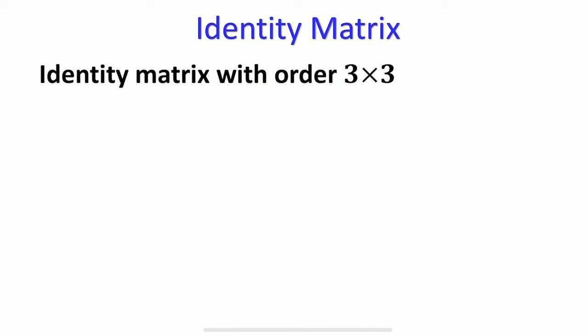Identity matrix with order 3 by 3. So: 1, 0, 0; 0, 1, 0; 0, 0, 1.